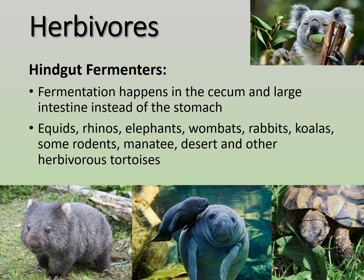Hindgut fermenters have their fermentation happening further down the GI system — commonly in the cecum or large intestine (colon). These animals usually have simple stomachs and are monogastric, but they have quite complex cecums or colons where microbes live. They have some disadvantages because fermentation is so far down the GI system.